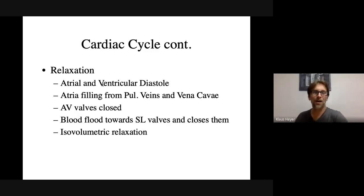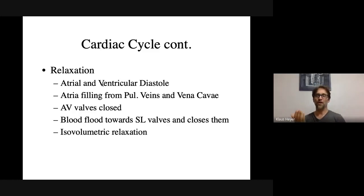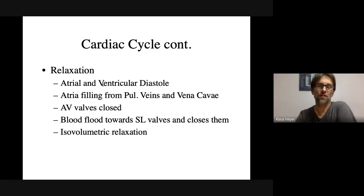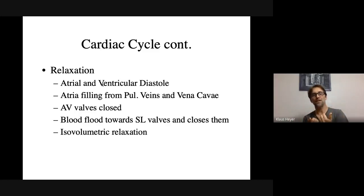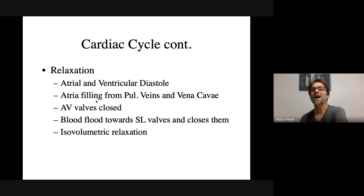In case you run into it, isovolumetric relaxation just means there's a brief period where all four valves are closed — this actually happens twice in a cardiac cycle: isovolumetric contraction and isovolumetric relaxation. Eventually enough blood fills the atria that the AV valves open, and we're back to the first step — rapid ventricular filling.